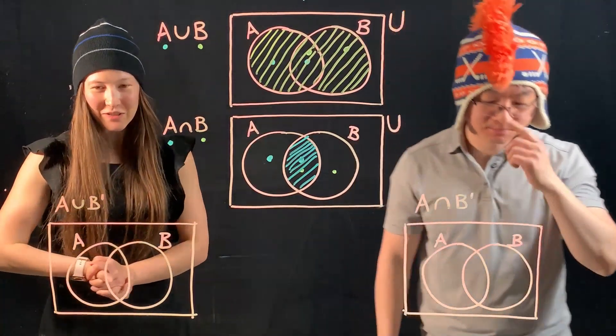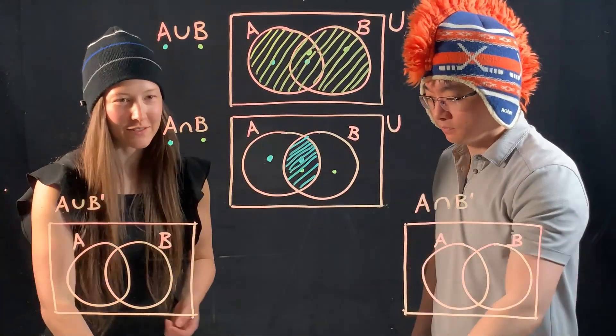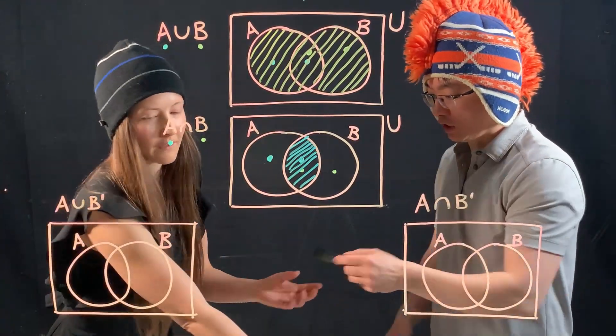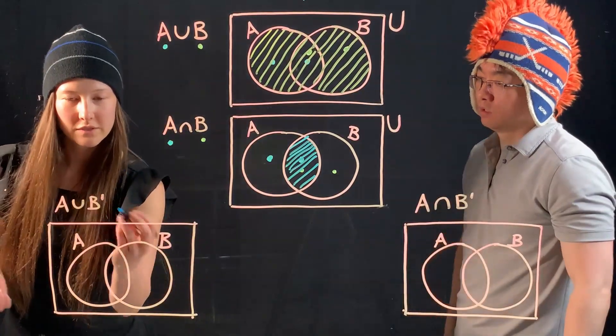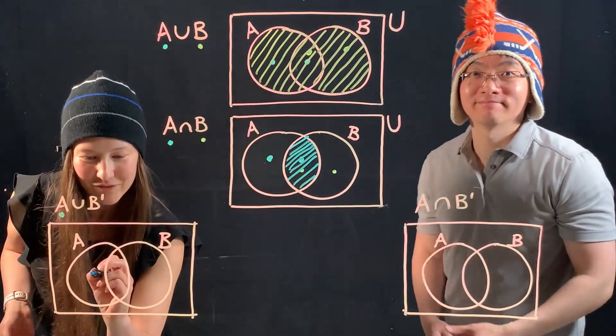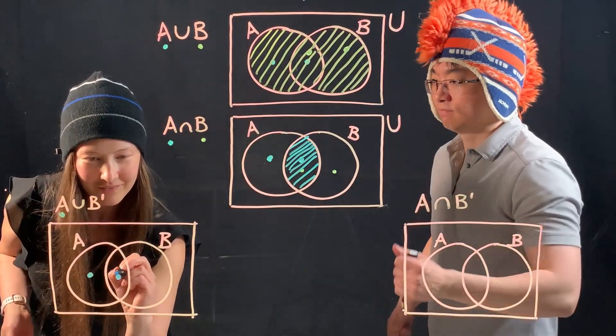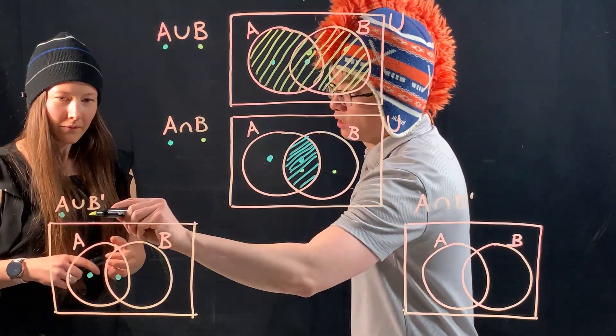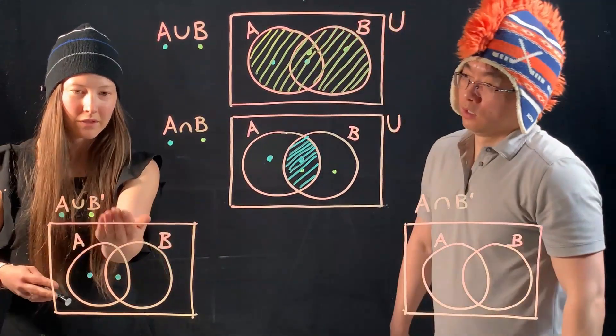Alright. Alright, so getting a little bit more complicated here, I think we can do this, right? Yeah, I'll take this one. Alright, so let's put our legend in here. I'm going to put a dot wherever A exists. We've done that a few times now. Now this is a little bit different. Oh, I get the hard one. So what does that mean? Can we read this?